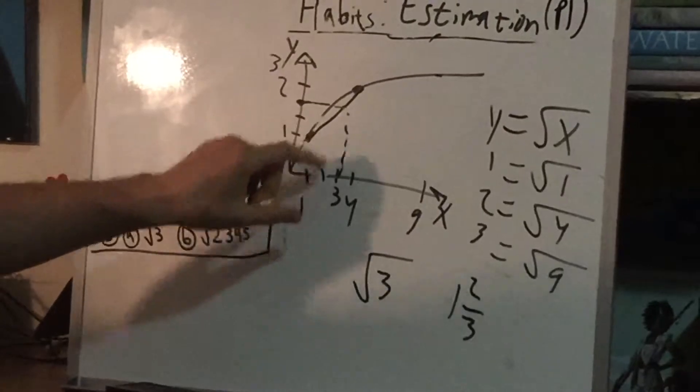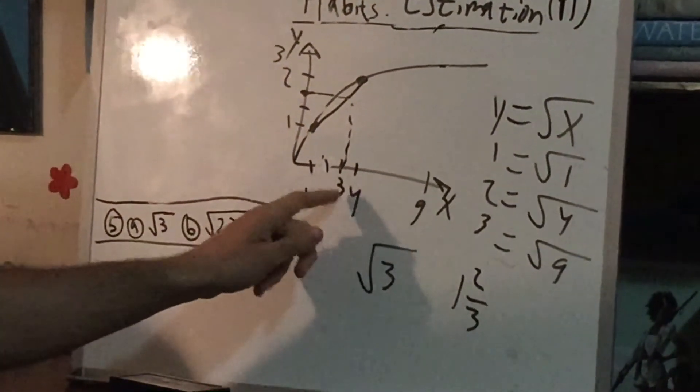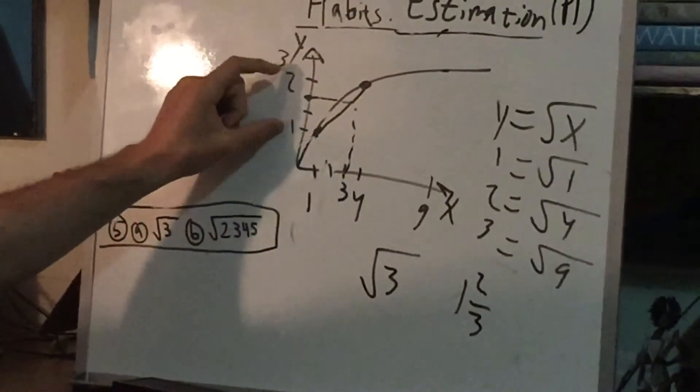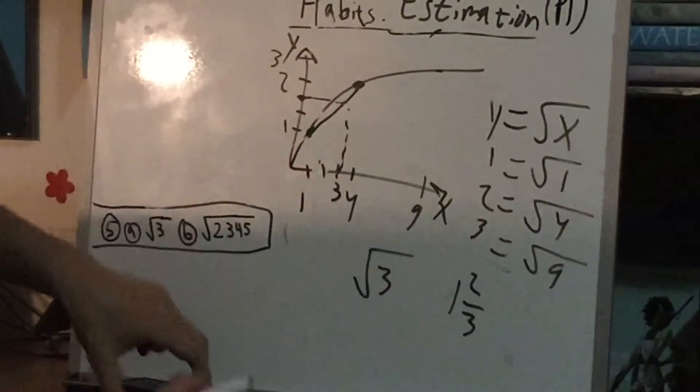Be careful when you think, oh, since it's 2 thirds of the way between 1 and 4 for the 3, then the square root of it will be 2 thirds of the way between our guesses on the other side. That's not the case.